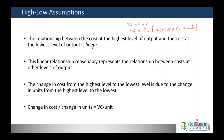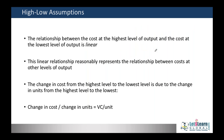In the high-low method, we assume that between the highest and lowest levels of output, costs are linear — meaning the total cost has a linear relationship with production. As activity level increases, cost will also increase. The total cost has a flavor of both fixed and variable components.